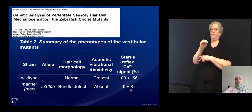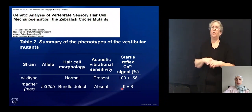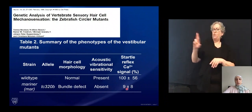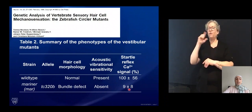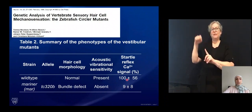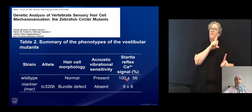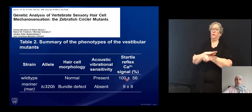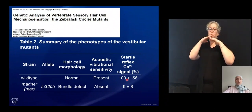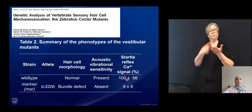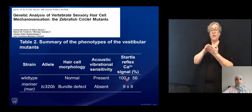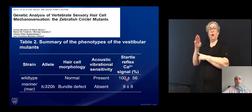The value shown in the far right of this table — 9 plus or minus 8 percent for the calcium signal — is not close to what we're seeing in wild type animals of 100 percent. However, what's important to take away is that it's not completely silent. This is quite important for the rest of the talk: the Mariner mutant is not starting at a zero response.